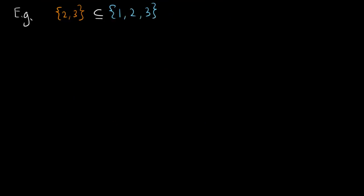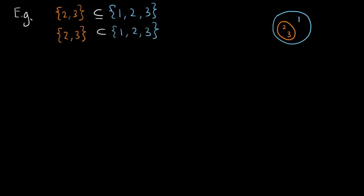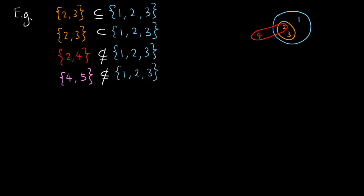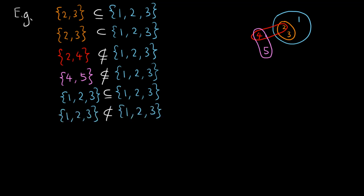Let's consider some examples. The set {2, 3} is a subset of the set {1, 2, 3}, which is straightforward. The set {2, 3} is even a proper subset of {1, 2, 3}, because 1 is not in {2, 3}. Now consider the set {2, 4}. Since 4 is not an element in {1, 2, 3}, the set {2, 4} is not a subset of {1, 2, 3}. Also not a subset of {1, 2, 3} is the set {4, 5}, which in fact has no elements in common with {1, 2, 3}. Note that {1, 2, 3} is a subset of itself, but it's not a proper subset of itself.